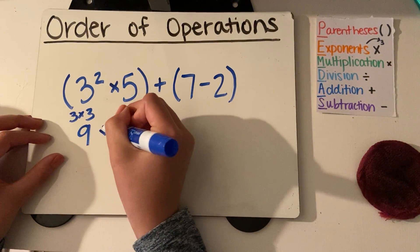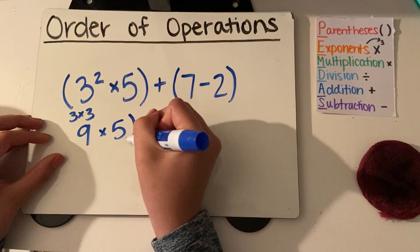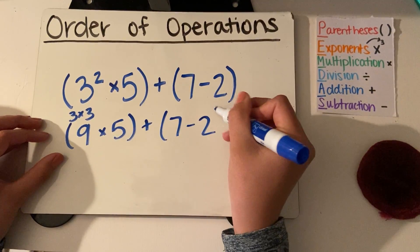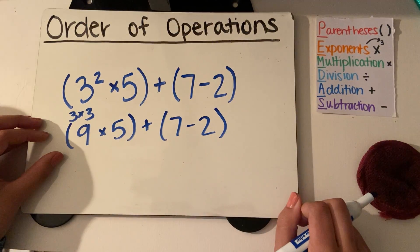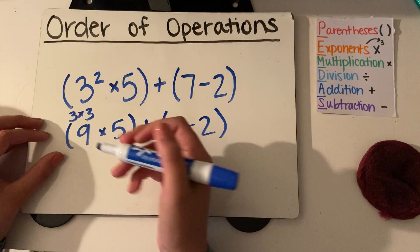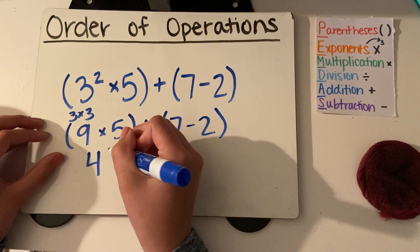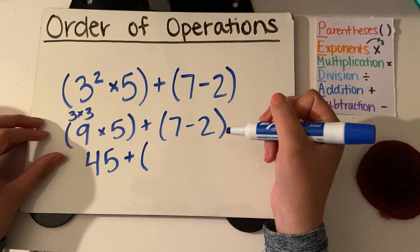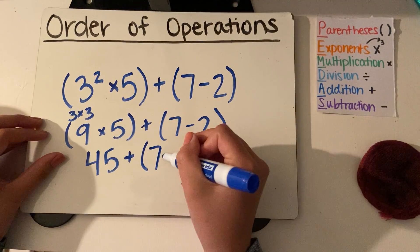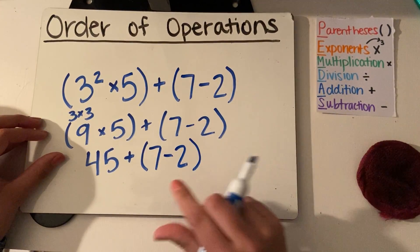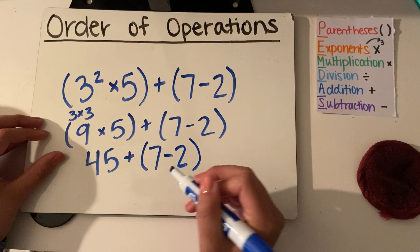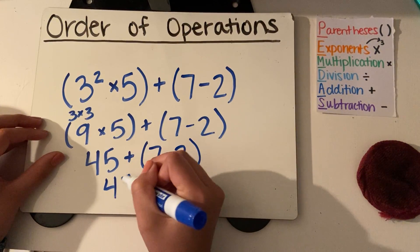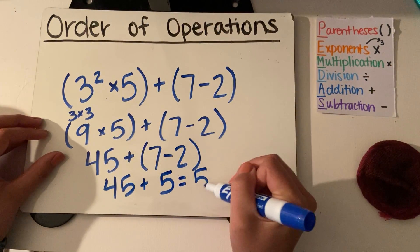So I'd have 9 times 5, plus 7 minus 2. I'm still working on solving inside this parentheses. I know that 9 times 5 is 45. Now I can finish out and write down the problem from above, 7 minus 2. Now I can solve for inside this parentheses. So I've got 7 minus 2, I know is 5. 45 plus 5 equals 50.